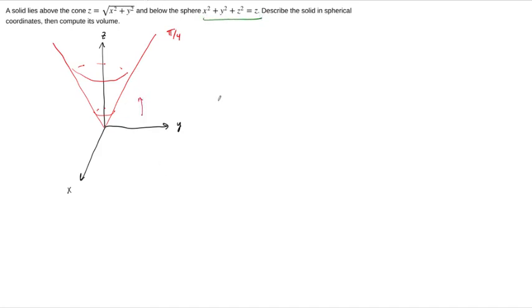The next question, though, is what sphere is this? Because it's not just x squared plus y squared plus z squared equals some constant. There's a z over here. What we have to do is complete the square and see what we get. So we subtract z, leave a little space here. And to complete the square, we have to add a quarter here, add a quarter here. And we end up with x squared plus y squared plus z minus 1 half squared equals 1 half squared.